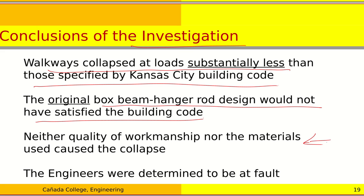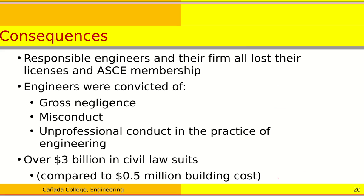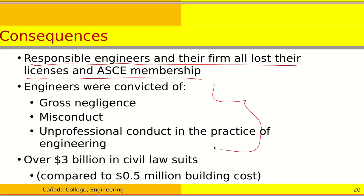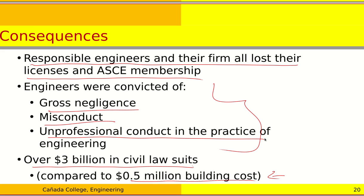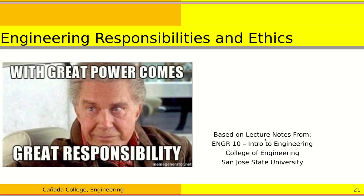The failure had nothing to do with the materials used or the quality of workmanship — the blame was that engineers did not do their job properly. The fabricator requested the design change, the engineer verbally agreed, drawings were changed, and approval was stamped without complete calculation. As a consequence, all responsible engineers and the firm lost their licenses. Over three billion dollars in civil lawsuits were filed — compared to the building's half-million-dollar cost. The engineers were convicted of gross negligence, misconduct, and unprofessional conduct.